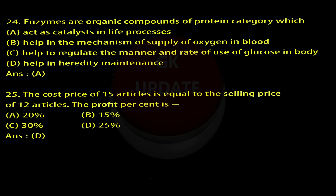Question 25: The cost price of 15 articles is equal to the selling price of 12 articles. The profit percent is: A. 20%, B. 15%, C. 30%, D. 25%. Answer: D.